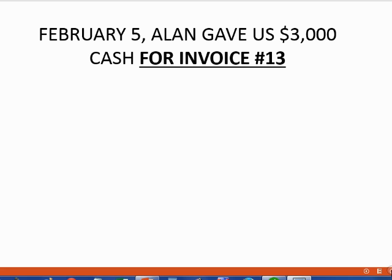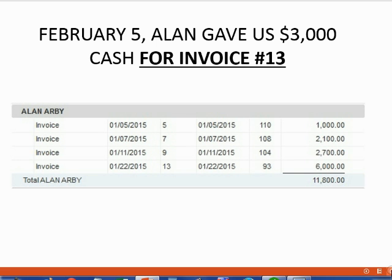Reapplying payments can sometimes be tricky. Let's take a look at this second example. February 5th, Alan gave us $3,000 cash specifically for invoice number 13. When we look at Alan's open invoice report, we do not see an exact match for $3,000. Therefore, QuickBooks will apply the money to the oldest invoice, in this case number 5. Because the payment is bigger than invoice number 5, the excess will be applied to the next oldest one, invoice number 7. This means QuickBooks is going to place two check marks on the oldest two.